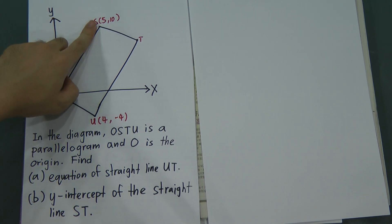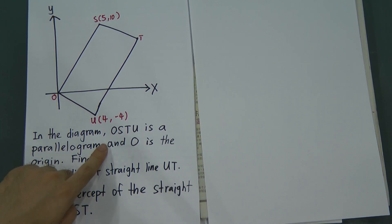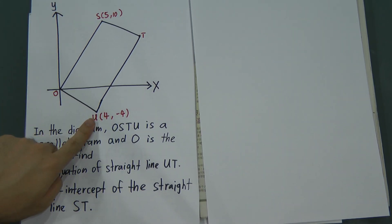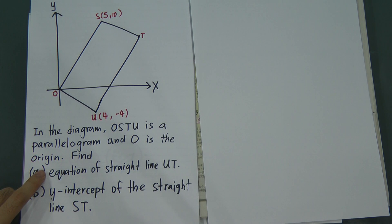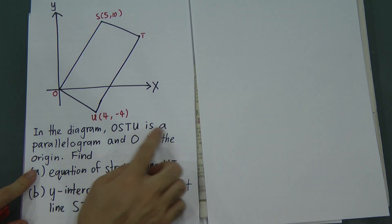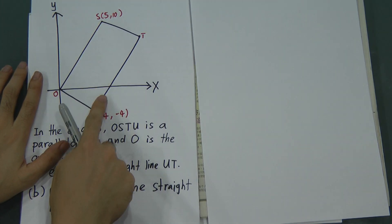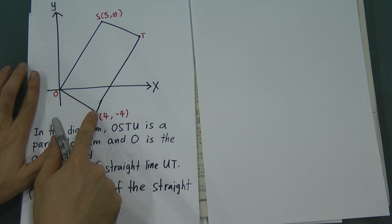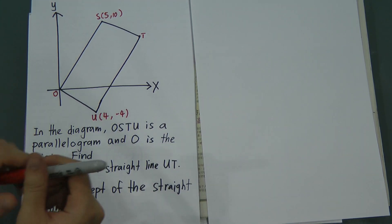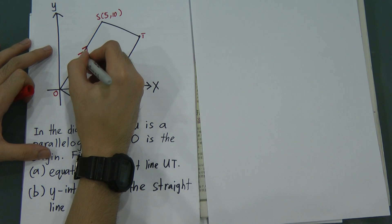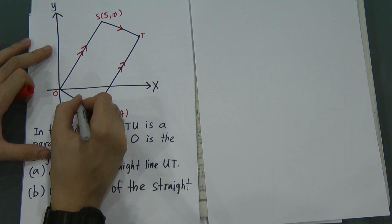From here we can see four coordinates. The question says in the diagram, O-S-T-U is a parallelogram and O is the origin. First you have to understand what is the meaning of parallelogram. Parallelogram means this line will be parallel with this line and this line will be parallel with this line. So O-S will be parallel with U-T and S-T will be parallel with O-U.